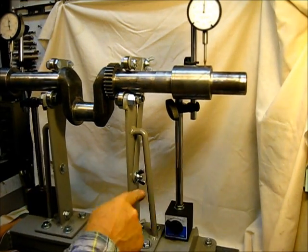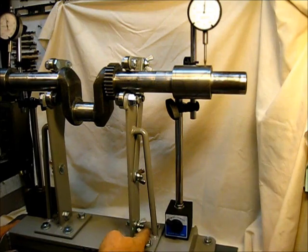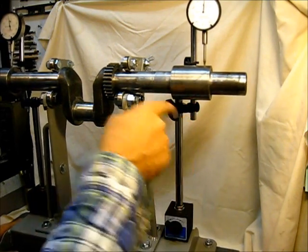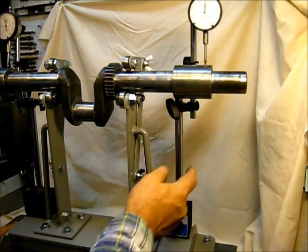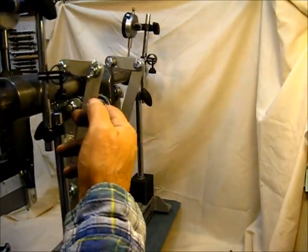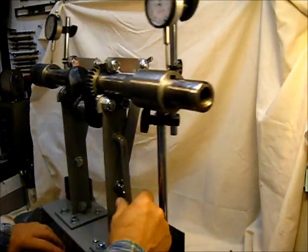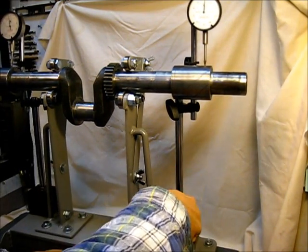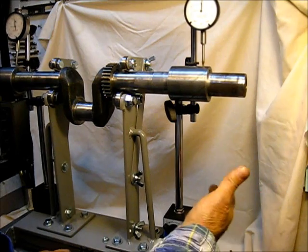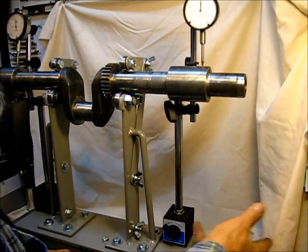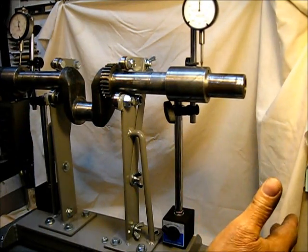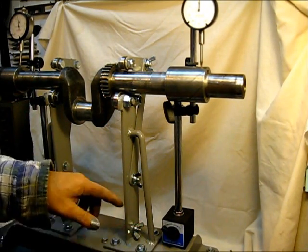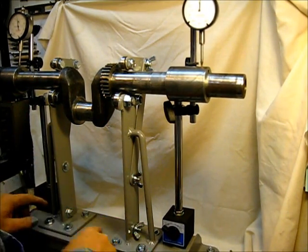As you can see, I also put a round support here, and I actually can clamp the dial indicator round part. I actually could saw this in two and then clamp it right here, and I wouldn't have to use the magnetic base. It's just so easy this way. There will be other things that I will test with this machine.